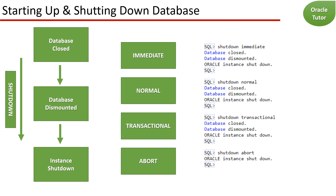The transactional shutdown mode prevents clients from losing data, including the results of their current activity. In this mode, no client can start a new transaction on the database instance. When a client ends the transaction that is in progress, the client is disconnected. Once all transactions have been completed, the database is shut down immediately.